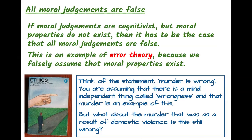Mackie concludes that all moral judgments appear to be false. If moral judgments are cognitivist — claiming something true or false about the world — but moral properties don't exist, then logically all moral judgments are false. This is error theory, because we falsely assume that moral properties exist. For example, with the statement 'murder is wrong,' you're assuming there is a mind-independent thing called wrongness and that murder is an example of it. But what about murder resulting from ongoing, persistent, horrific domestic violence — is that still wrong?